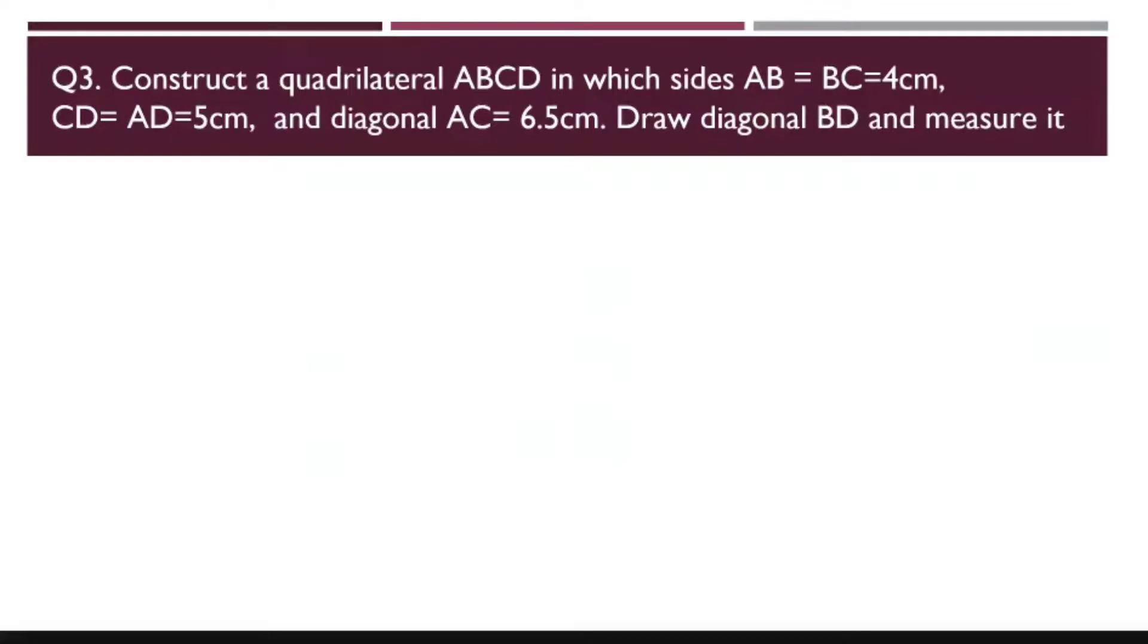CD is 5 cm and AD is also 5 cm and diagonal AC is 6.5. So this is the same case as the previous question with what we had done, where the four sides and the diagonal, their lengths are given to us. So again, as we did earlier, we will be drawing the rough figure first.